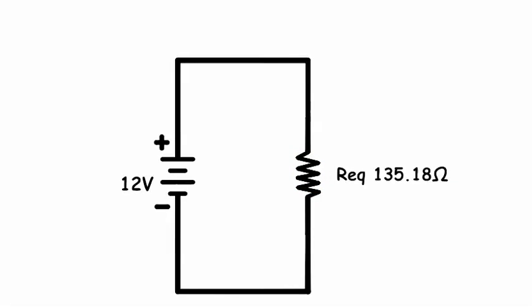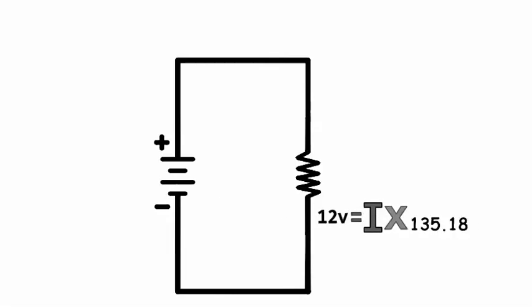Okay, we now know the total resistance in this example. We plug our known values into Ohm's law and we get 89 milliamps.